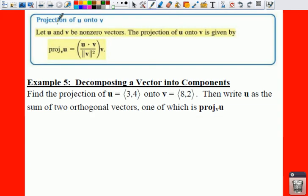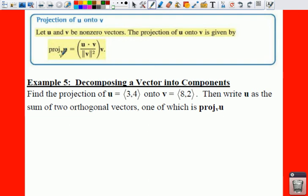The way to find your projection of U onto V: notice how the wording is here. The projection of U onto V is given by the dot product of U dot V, and then you have to take the magnitude of V squared times your vector V.